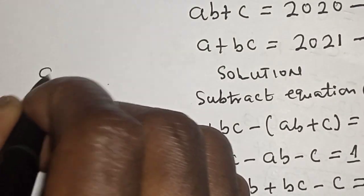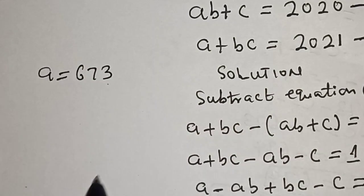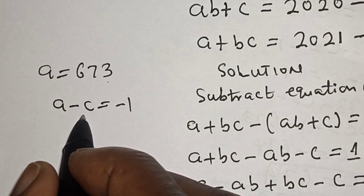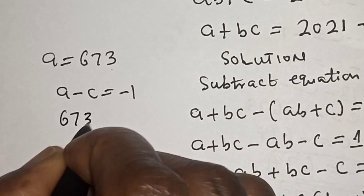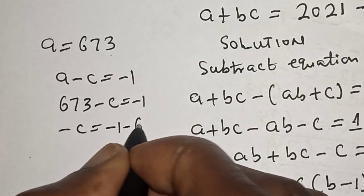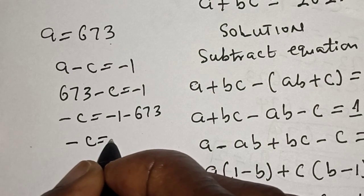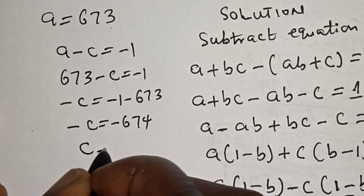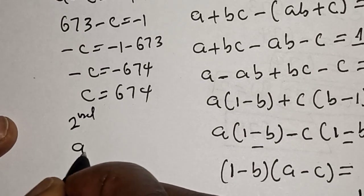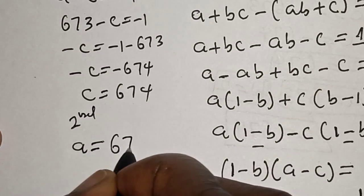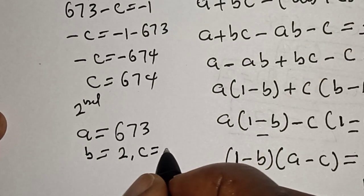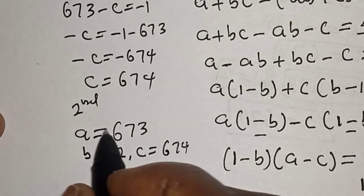Since A = 673, substitute into A − C = −1: 673 − C = −1, so −C = −1 − 673 = −674, therefore C = 674. From the second case: A = 673, B = 2, and C = 674. That is our answer.